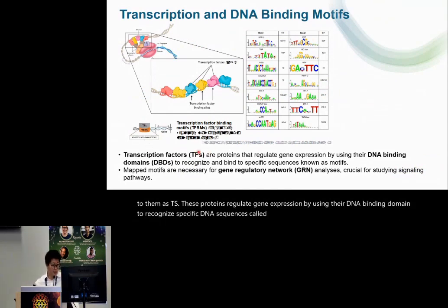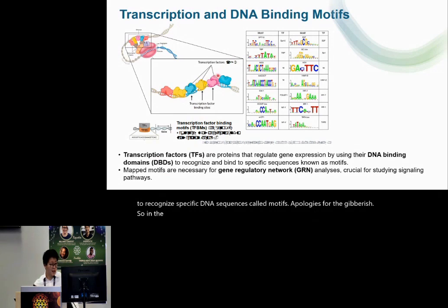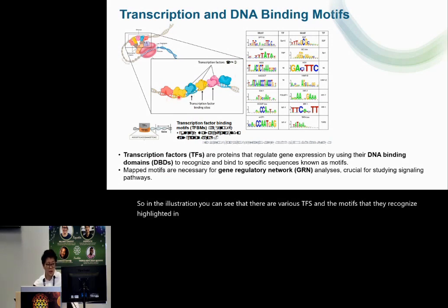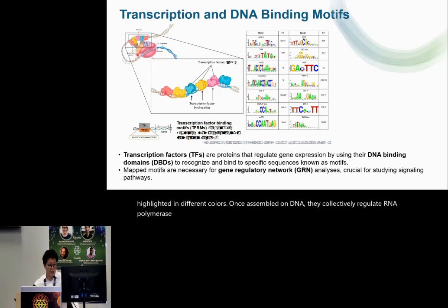Apologies for the gibberish. In the illustration, you can see that there are various TFs and the motifs that they recognize, highlighted in different colors. Once assembled on DNA, they collectively regulate RNA polymerase to control gene expression.